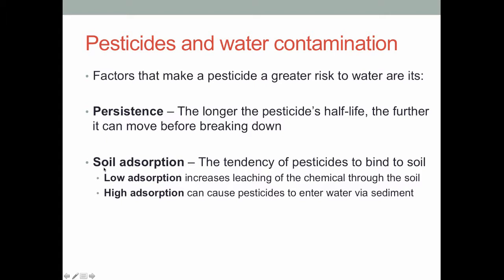Beyond that, how the chemical adsorbs to soil matters. Soil adsorption is the tendency of a chemical to bind to soil. If a chemical has low adsorption, meaning it does not bind to soil, it's more likely to leach through the soil column and end up in the groundwater, since there's nothing slowing it down. If it has high adsorption, it'll stick to the soil and during a rain event get washed away into a river, pond, or ditch attached to the actual sediment. When designing pesticide chemistries, you want something that binds tightly enough that it doesn't sink into the groundwater, but not so tightly that it sticks on soil for a long period of time.